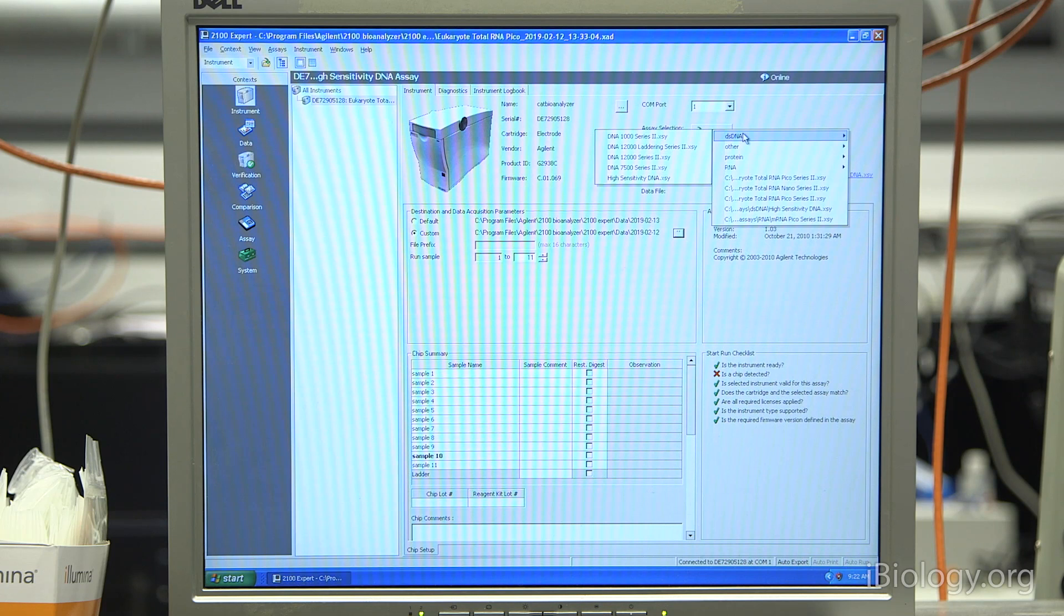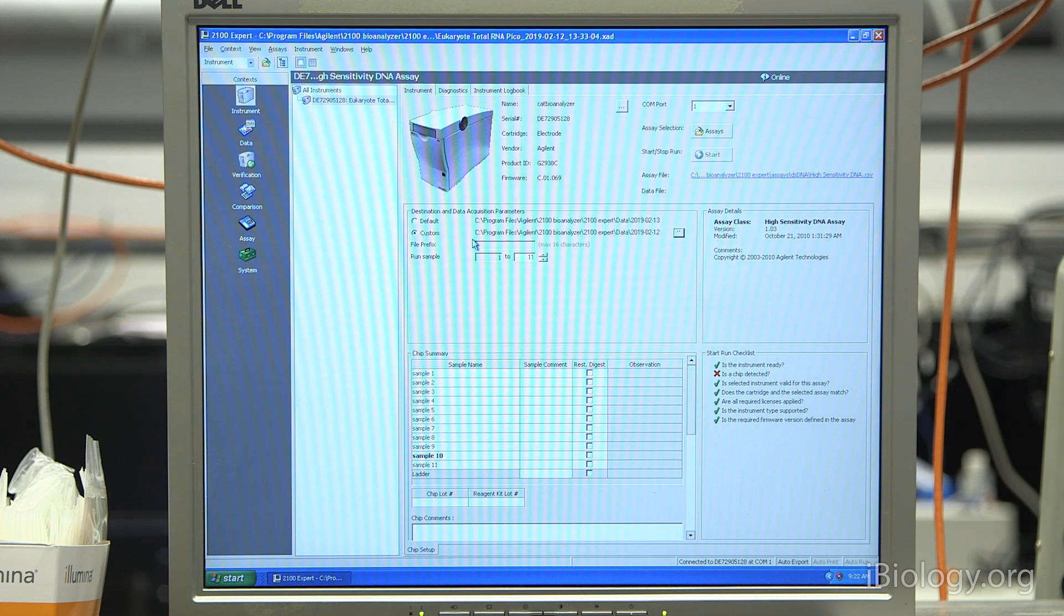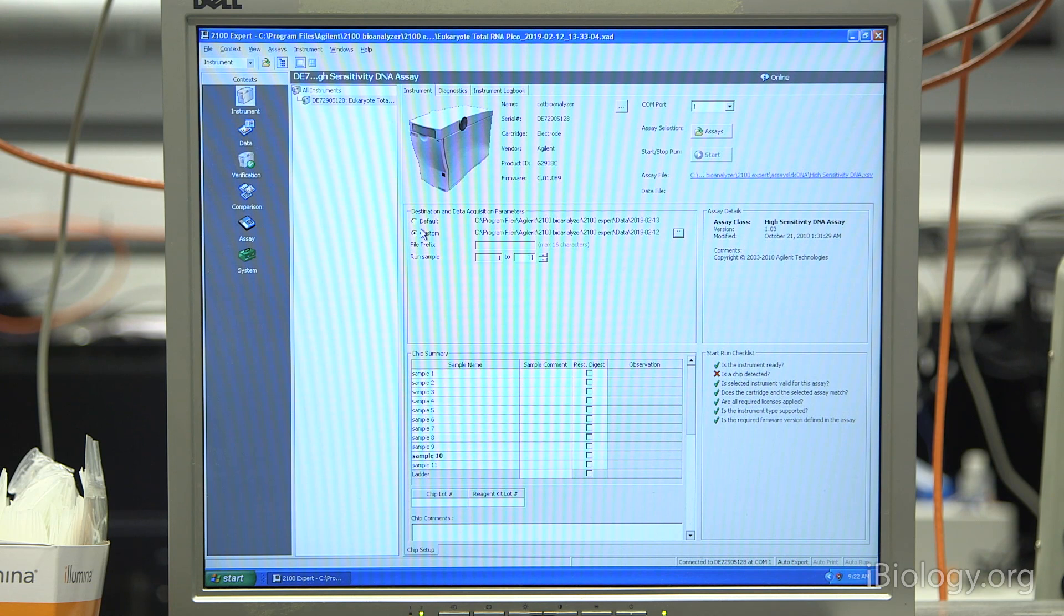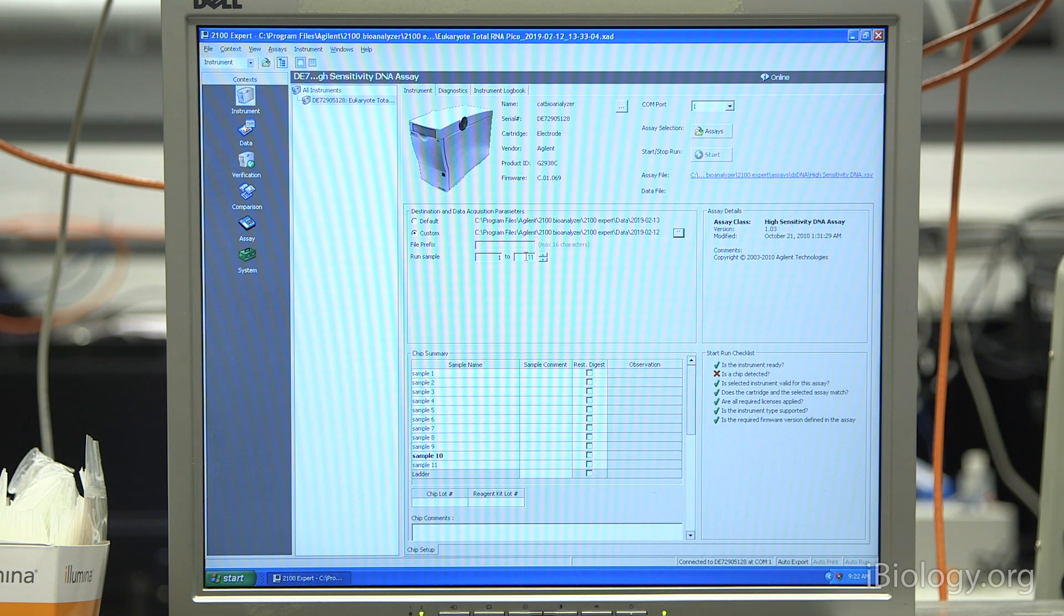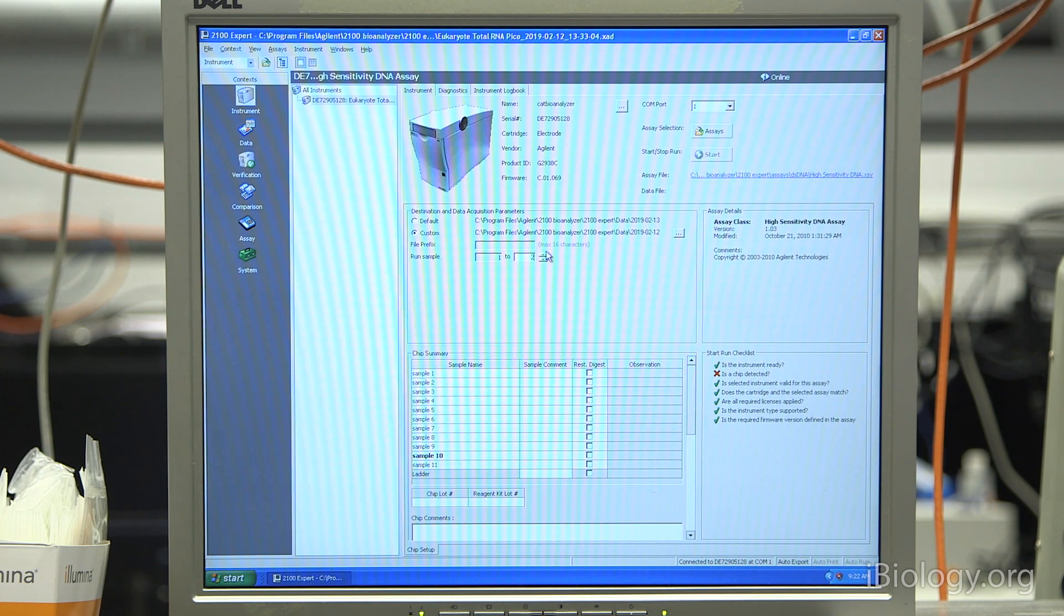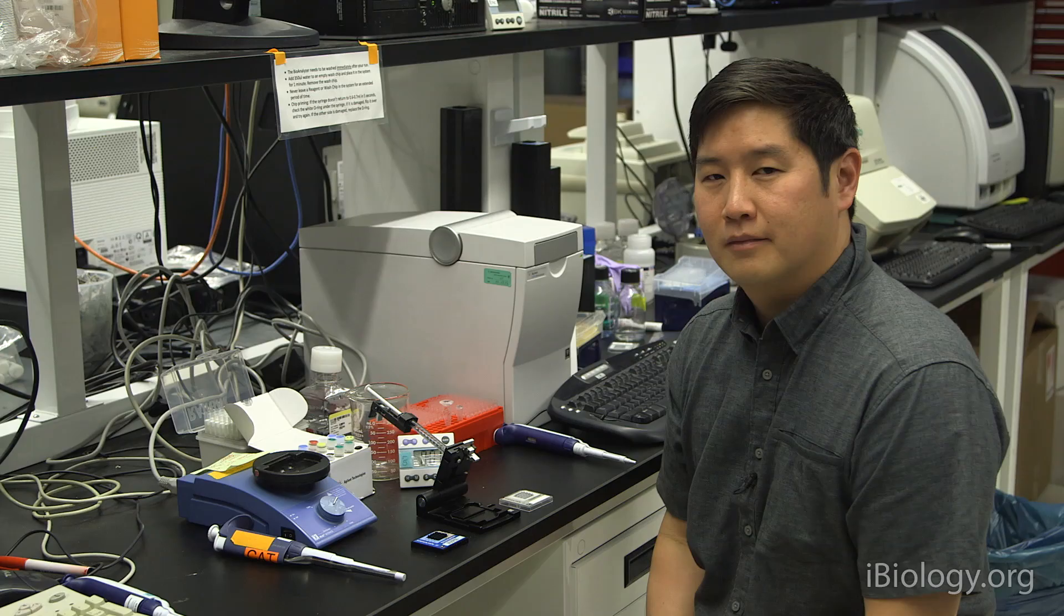Since we're running DNA high-sensitivity, we'll go to double-stranded DNA and select high-sensitivity. Next, you have an option to select where your data gets saved to. It can save into a default folder or a custom folder that you select. After that, let the system know how many samples you'll be running. On the high-sensitivity DNA chip, you can run up to 11 samples. Today, we'll only be running two samples. At the bottom, you can give names of your different samples and label them down here. We'll just use sample A and sample B.